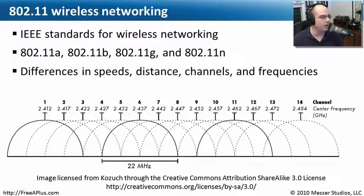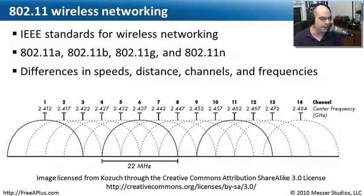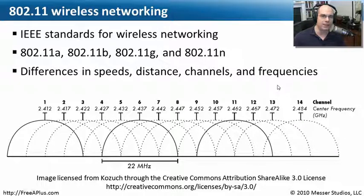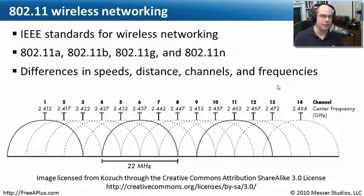Depending on the different types and technologies in use, these may use different channels, different frequencies, different distances, and different ways of communicating. Looking at the 2.4 gigahertz connections, you'll notice there's a lot of overlap between channels. We've got 22 megahertz ranges used for a single channel. On 802.11b, for example, you might have somebody on channel 1, somebody on channel 6, and somebody on channel 11, because none of those channels overlap with each other. Generally, you'll see channels 1, 6, and 11 configured on access points — something to keep in mind when planning to deploy a wireless network.